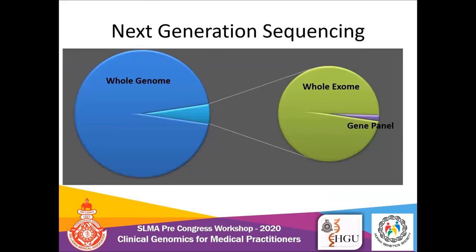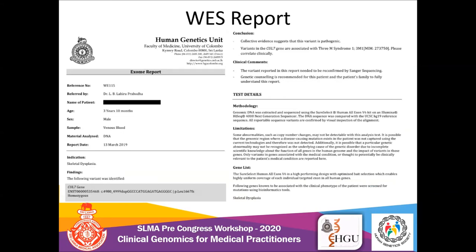There are three main types of next generation sequencing: whole genome sequencing, whole exome sequencing, and gene panel or targeted sequencing. A couple of gene panels have been developed recently, but their cost-effectiveness is a problem. Studies have shown that whole exome sequencing or whole genome sequencing are most economical when used as first-line genetic tests, especially whole exome sequencing early on in the diagnostic journey. Here is a whole exome sequencing report giving a diagnosis of 3M syndrome to a patient.